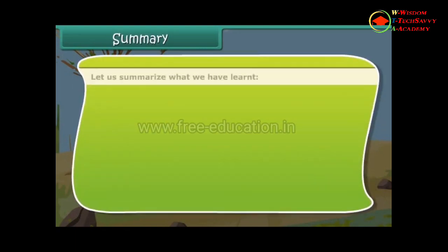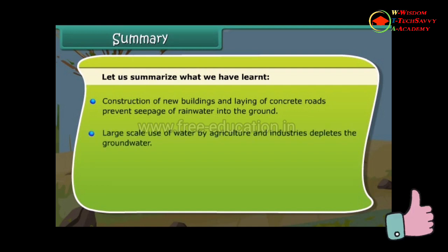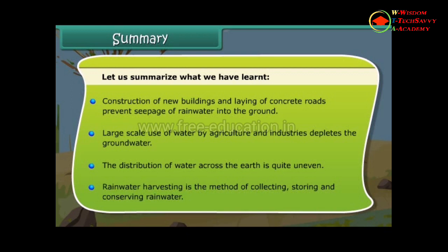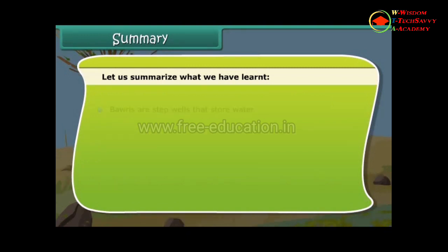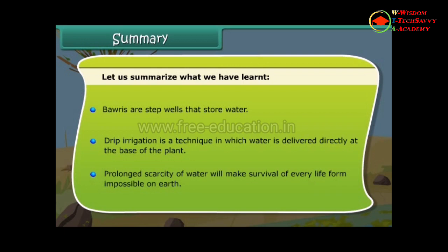Summary. Construction of new buildings and laying of concrete roads prevent seepage of rainwater into the ground. Large-scale use of water by agriculture and industries depletes the groundwater. The distribution of water across the earth is quite uneven. Rainwater harvesting is the method of collecting, storing and conserving rainwater. Bavaris are step wells that store water. Drip irrigation is a technique in which water is delivered directly at the base of the plant. Prolonged scarcity of water will make survival of every life form impossible on earth.